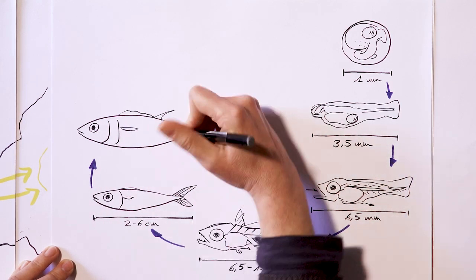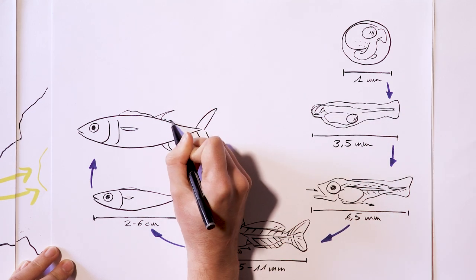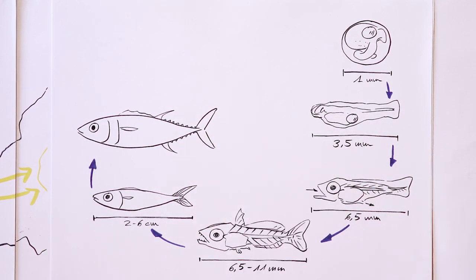It's not transparent and we can see the finlets, the pointy little fins that are so typical of the tuna family.